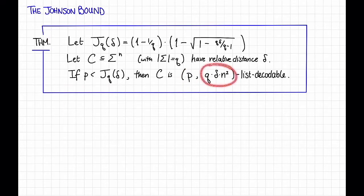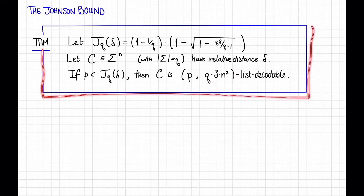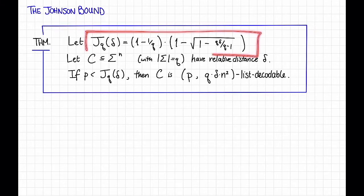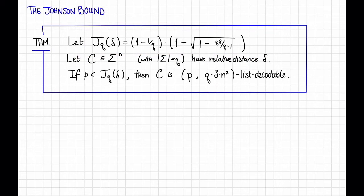Notice that we might hope for a better list size than n squared — maybe constant or something like that. But for us, we're going to call anything polynomial in n a decent list size. That is qualitatively what the Johnson bound says. Quantitatively, though, it's a little bit hard to parse — this expression looks a bit gross. For the rest of this video, we will try to quantitatively compare the Johnson bound to the list decoding capacity theorem that we saw in the previous video.